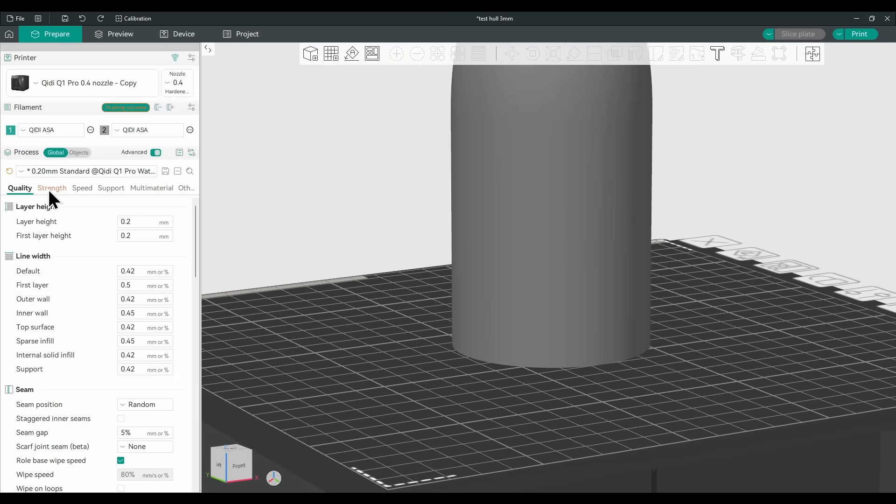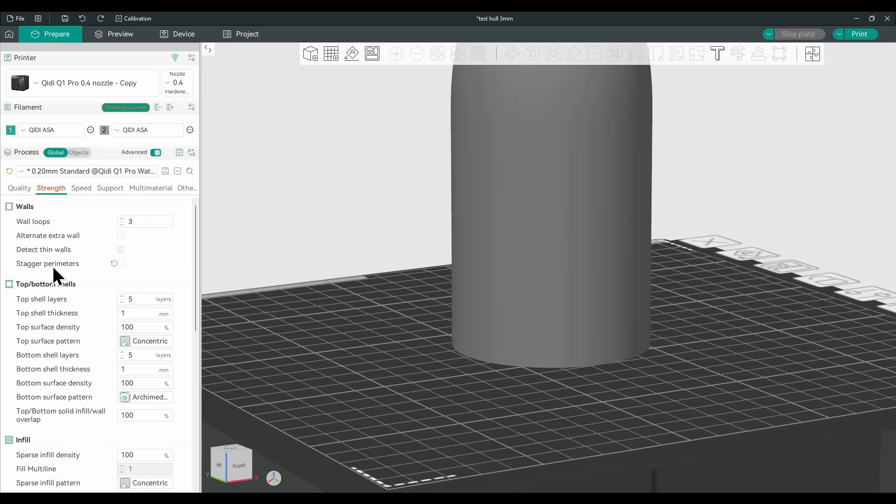However, in the last six months or so, this has started to be integrated into the core features of many mainstream slicers, such as Bamboo Studio, PrusaSlicer, and OrcaSlicer, opening this technique up to almost anyone with a filament 3D printer.